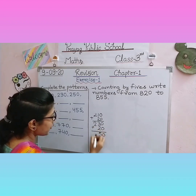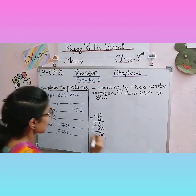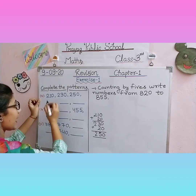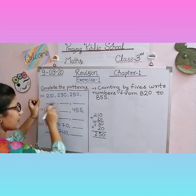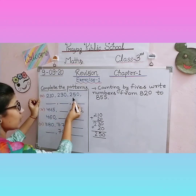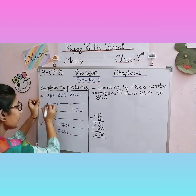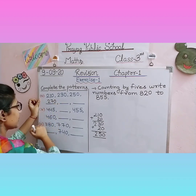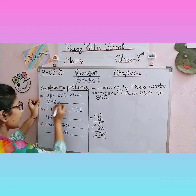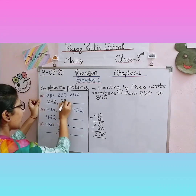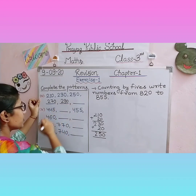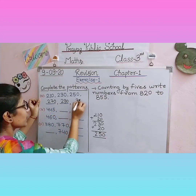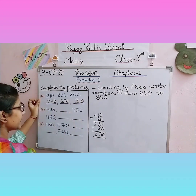We find that two hundred ten plus twenty gives us two hundred thirty. Now we know how to complete this pattern — we keep adding twenty. Two hundred fifty plus twenty gives two hundred seventy. Two hundred seventy plus twenty gives two hundred ninety. Two hundred ninety plus twenty gives three hundred ten. In this way we have completed the pattern.